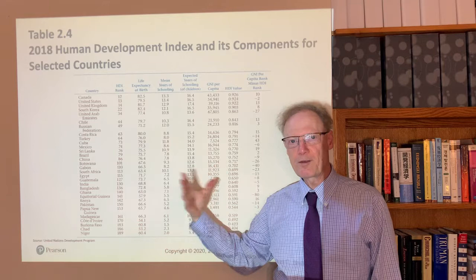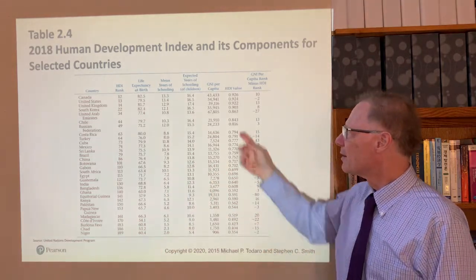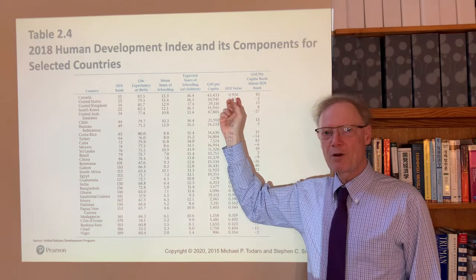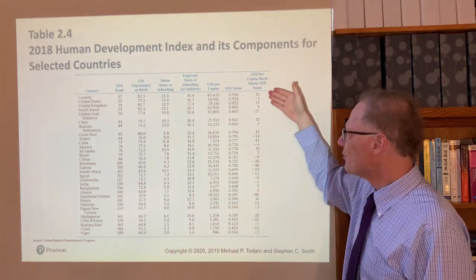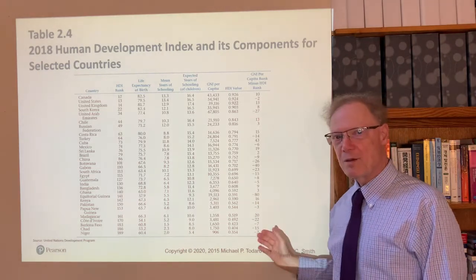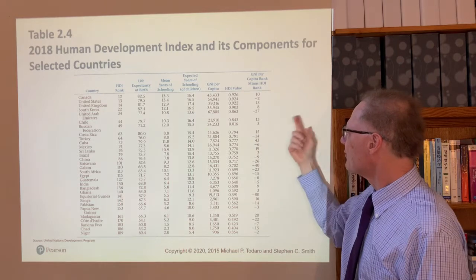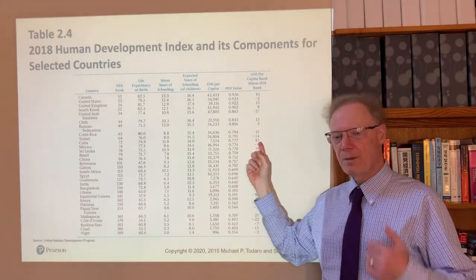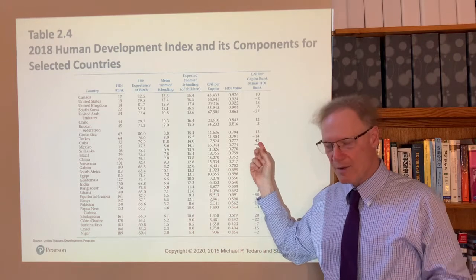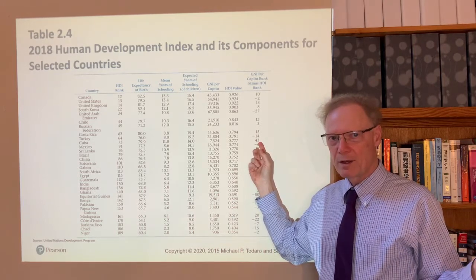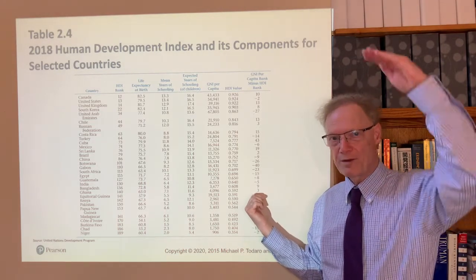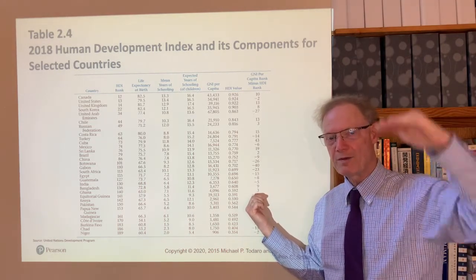The table also shows the components for constructing the index, and you can use these to construct the HDI yourself. The HDI value ranges from 0.926 to 0.354 — Norway was the highest in this year. What I really want to focus your attention on is the difference between GNI per capita rank minus HDI rank, which can be quite dramatic. For example, Cuba appears 43 ranking points higher on the Human Development Index than you would expect based on its income per capita ranking.